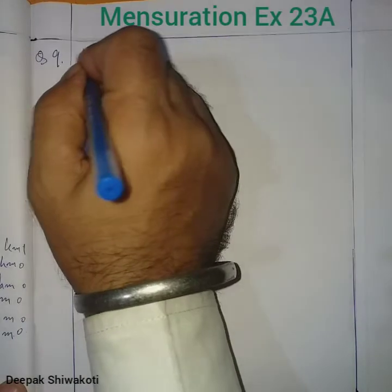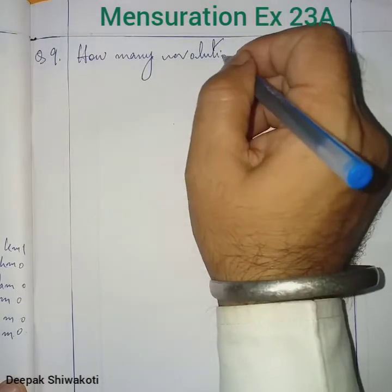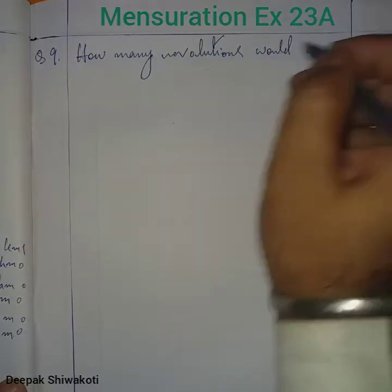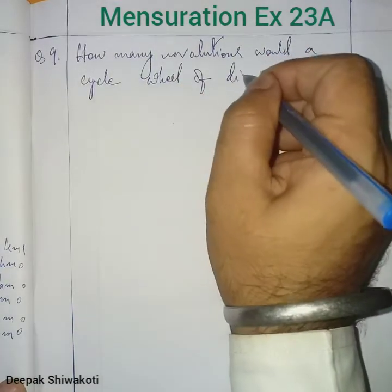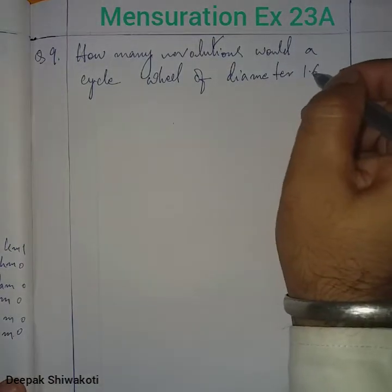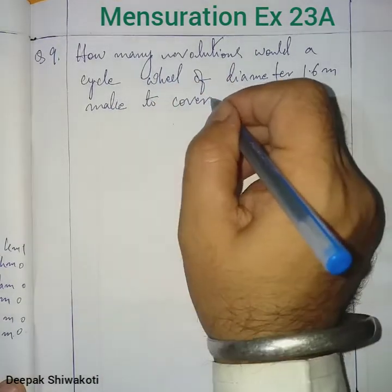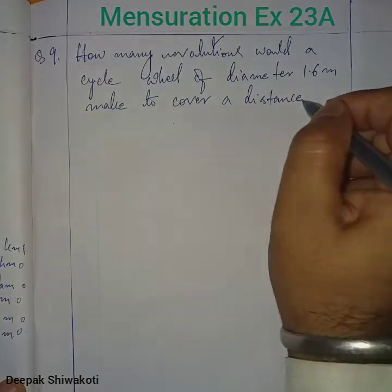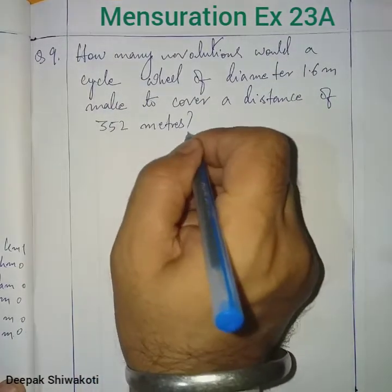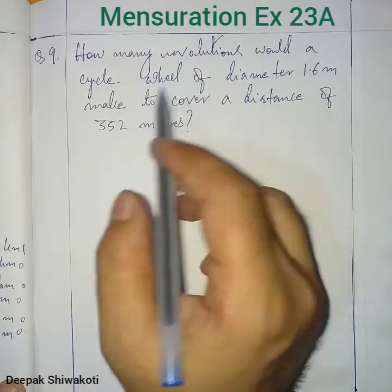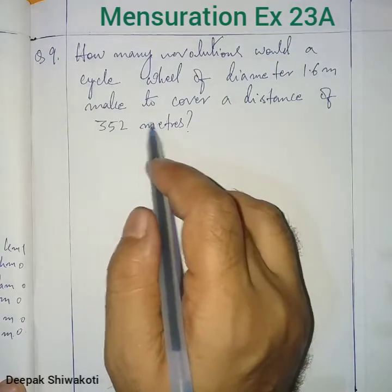How many revolutions would a cycle wheel of diameter 1.6 meters make to cover a distance of 352 meters? So here, the diameter of the wheel is given as 1.6 meters and the distance is also given.